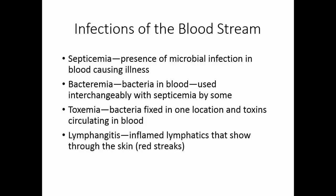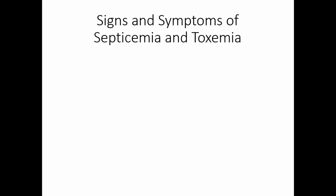Lymphangitis is when you have inflamed lymphatic vessels. These will show through the skin as red streaks that run from the site of infection to the nearest lymph nodes. Septicemia typically presents with fever, chills, nausea, vomiting, and a feeling of doom. This can progress to septic shock, or low blood pressure due to vasodilation.